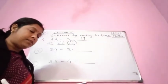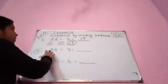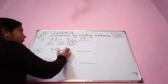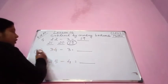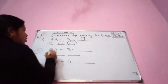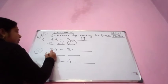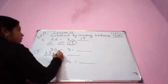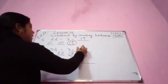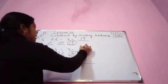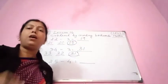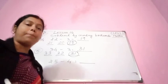Next number: 34 minus 3. Again, 34 minus 3 — we have to subtract 3 from 34. Before 34, you have to go 3 places. Before 34: 33, 32, 31. The answer is 31. We are counting backwards — please keep in mind, we are counting backwards.